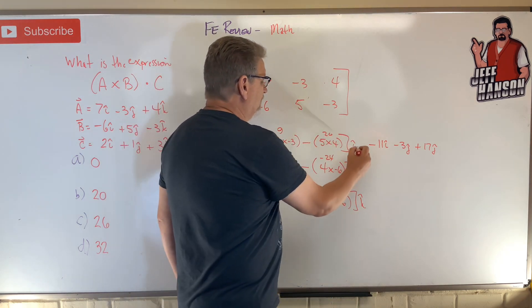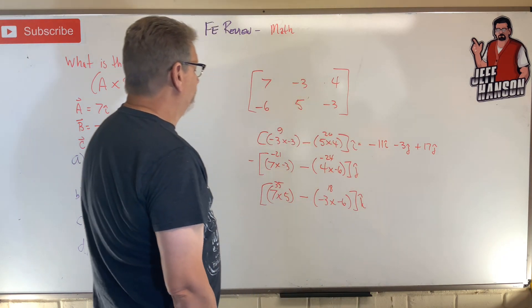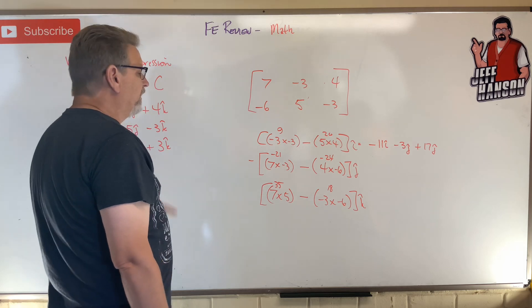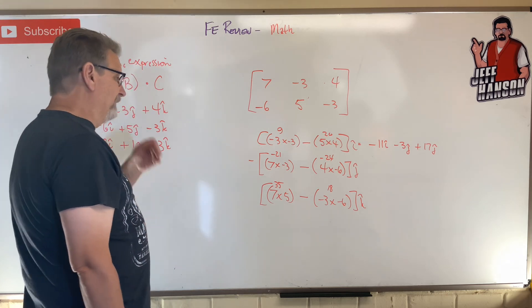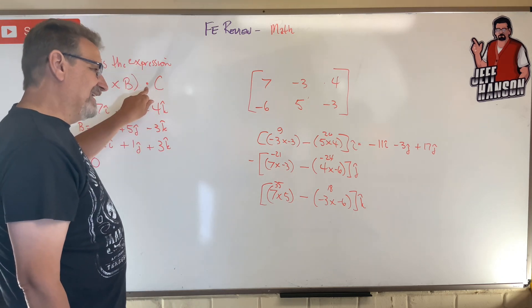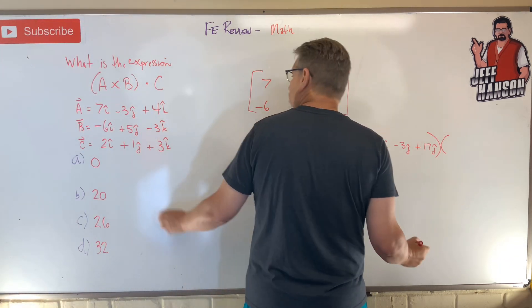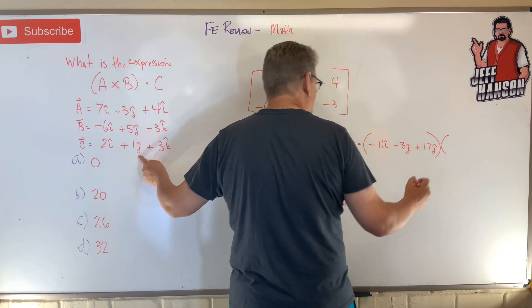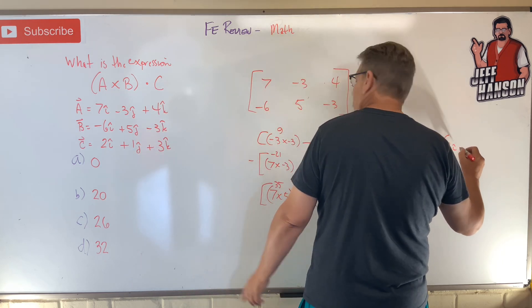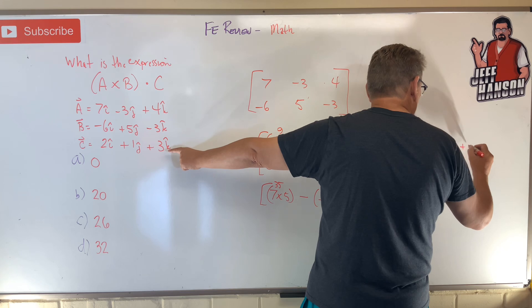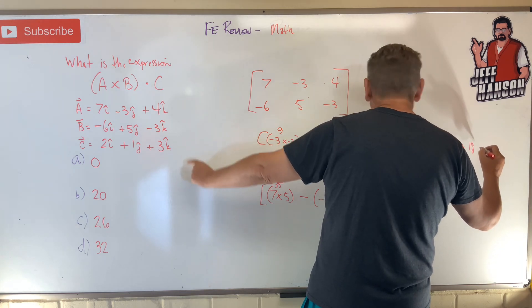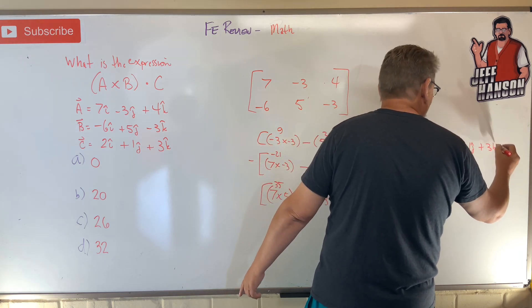So that is the resultant of, or the product, rather, of A cross B. Now we've got to dot that with C. So you remember how to do the dot product. You take this vector here, and then the next one is you've got to dot it with C. So here's C. So 2i hat plus 1j hat plus 3k hats.